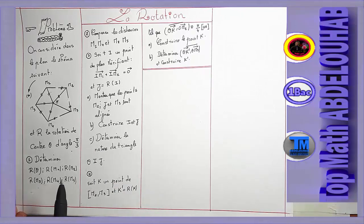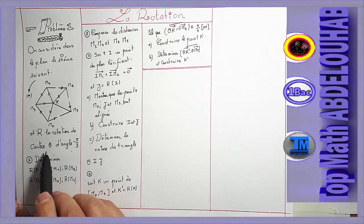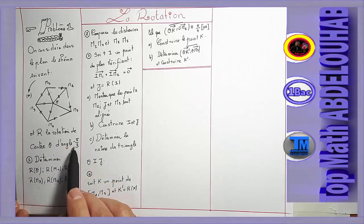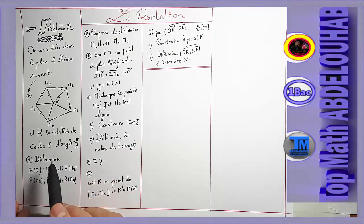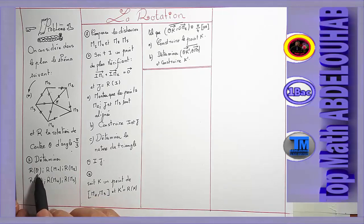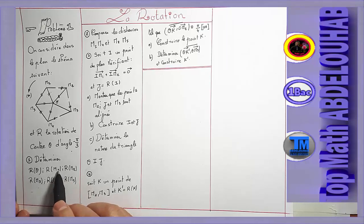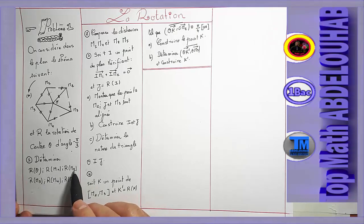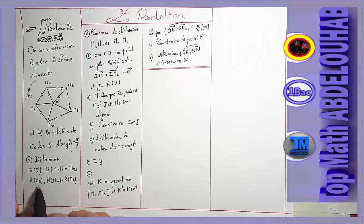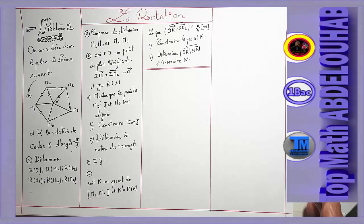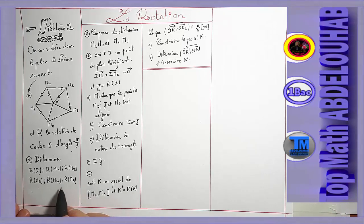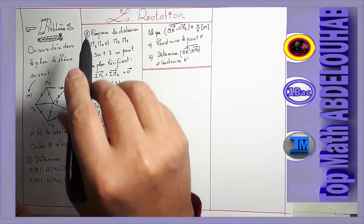Autrement dit, leurs côtés sont isométriques. Et R, la rotation de centre O, d'angle moins pi sur 3. Attention au sens. Donc, premièrement, déterminer R(O), c'est-à-dire l'image du point O par la rotation ; l'image du point M1 par la rotation R ; l'image de M2, M3, M4 et M5 par la rotation R.